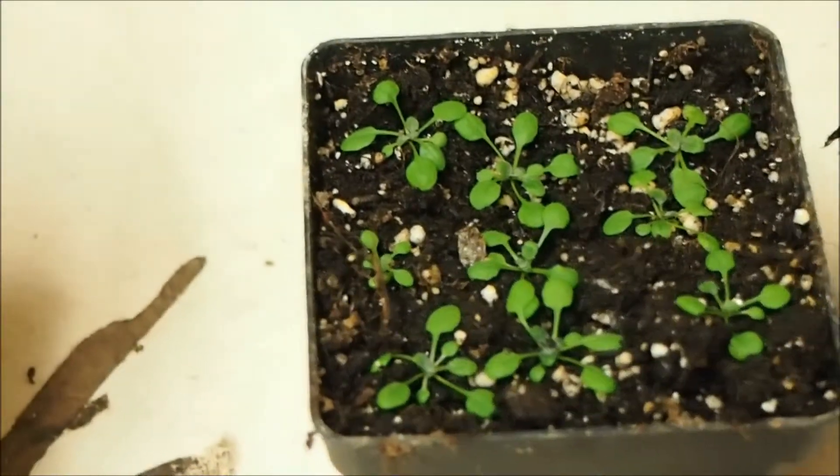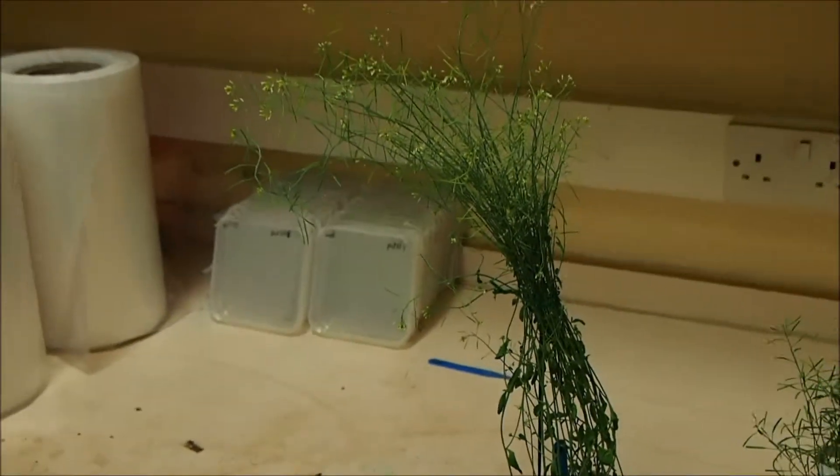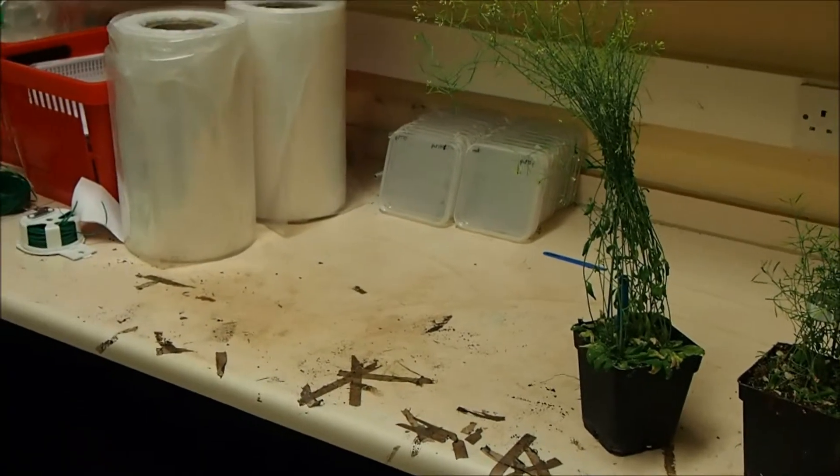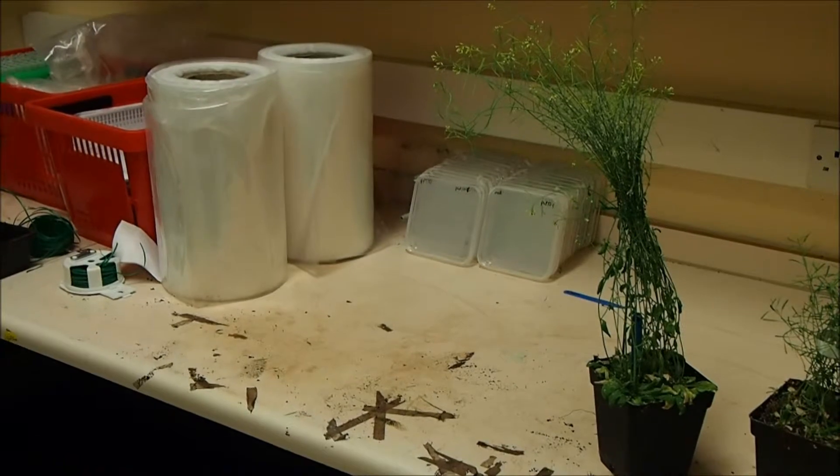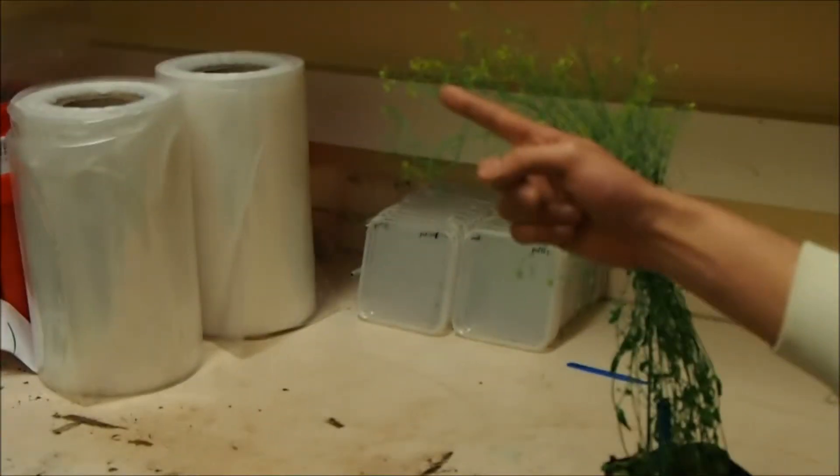Okay, and then next we're going to show the two-month-old Arabidopsis, which looks like this. As you can see, it's quite tall for a weed. It's got stems, some flowers as well as you can see there, and some siliques, which is where the seeds form and that's how we harvest it.